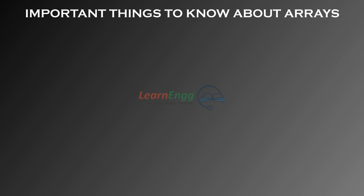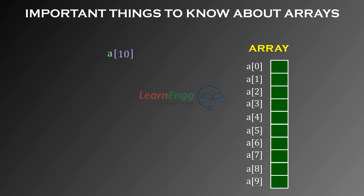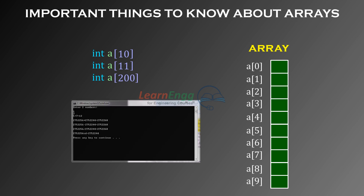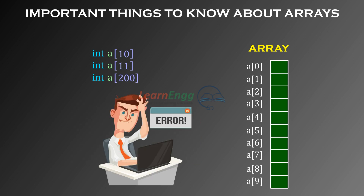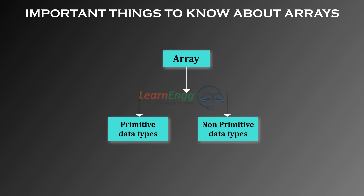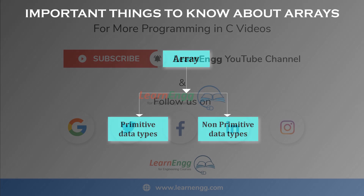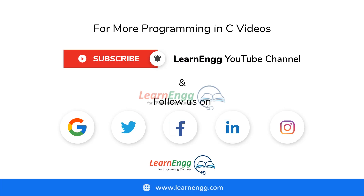Important things to know about arrays: Array indexes always begin with 0, so an array of size 10 has elements from index 0 to 9. If you access out-of-bounds indices such as integer array[10], array[11], or array[200], the C compiler will not show any error but you will get runtime errors while executing the program. Arrays are supported by primitive data types and non-primitive types like structures, unions, pointers, etc.